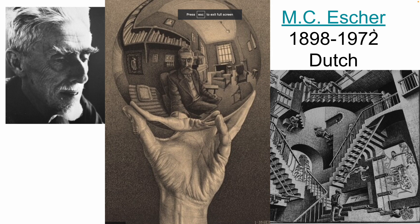I met M.C. Escher today. He was born in 1898 and died in 1972, and he was Dutch. Looking at some of his art, he lived to be a pretty old man, but he was also really interested in perspective drawings as well as pushing the boundaries into a kind of surrealism look.